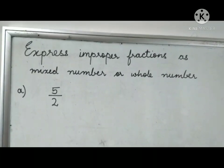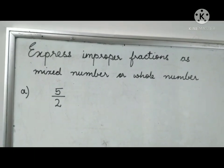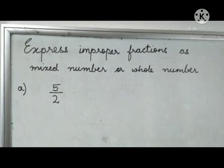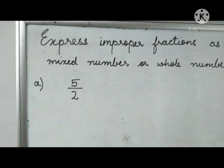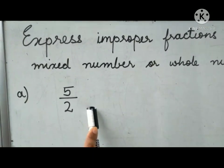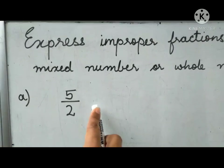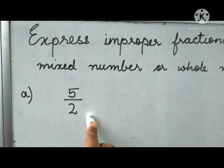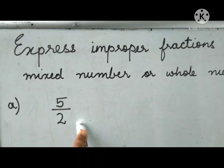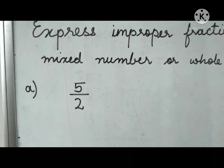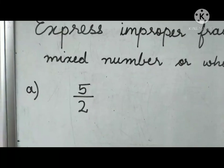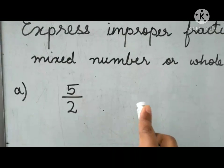Hello everyone. Today in math we are going to express each improper fraction as a mixed or whole number. Now look at this fraction. It's an improper fraction because the numerator is a bigger number and the denominator is a smaller number. This improper fraction you need to change into a mixed number. Before we start, we need to first represent this number in the form of a figure.